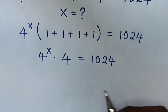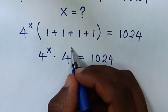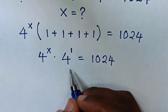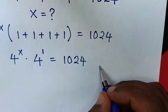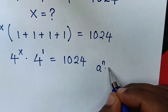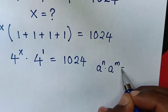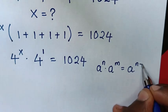Then this 4 is same as 4 power 1. Then from here, we will apply this exponential rule a power n times a power m is equal to a power n plus m.